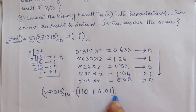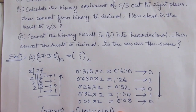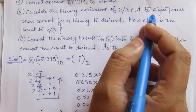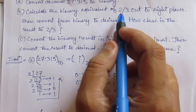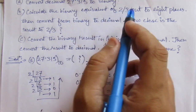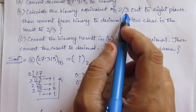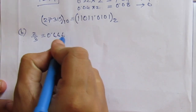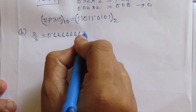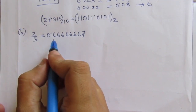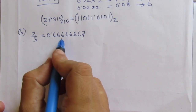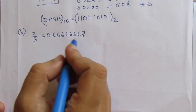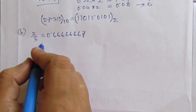Now the second part of the problem: calculate the binary equivalent of 2/3 out to eight places. We have to find the binary equivalent of 2/3 and consider up to eight decimal places. We can write 2/3 as 0.6667. Using the same multiply-by-2 process as before, we proceed through eight steps.